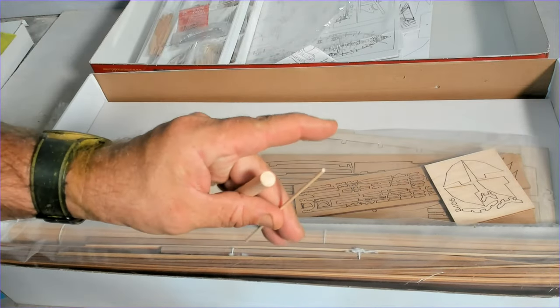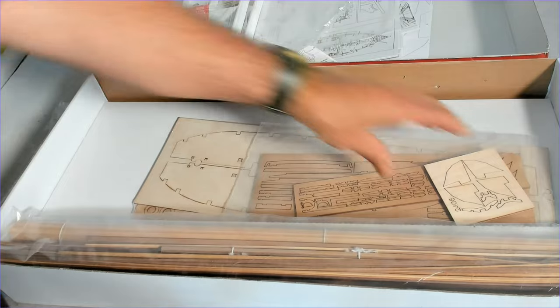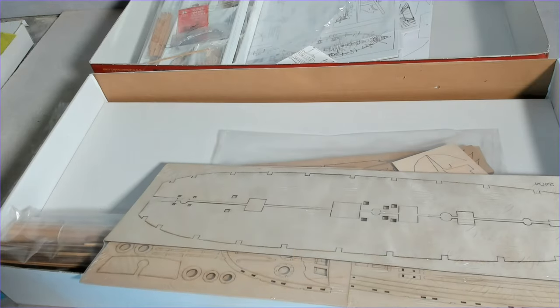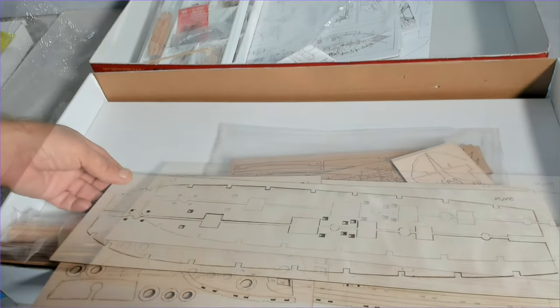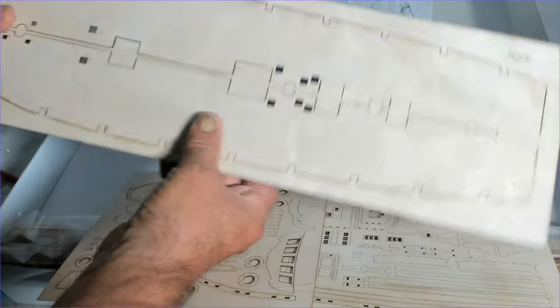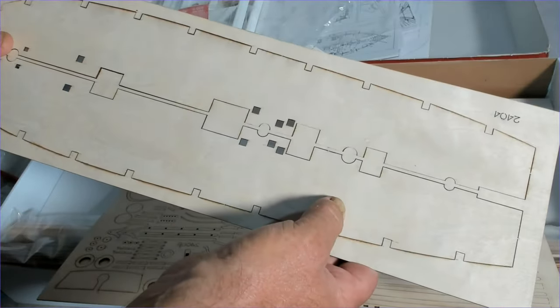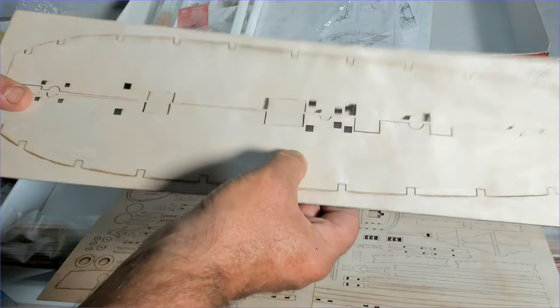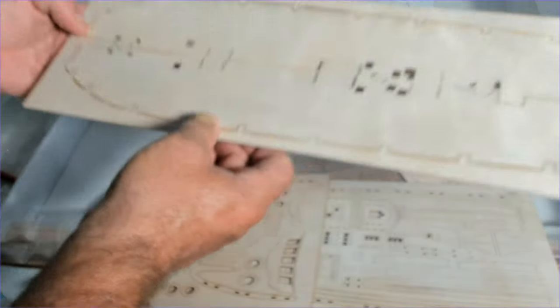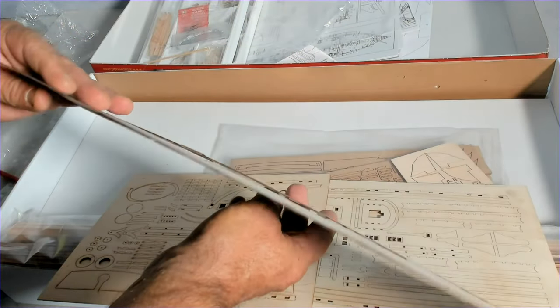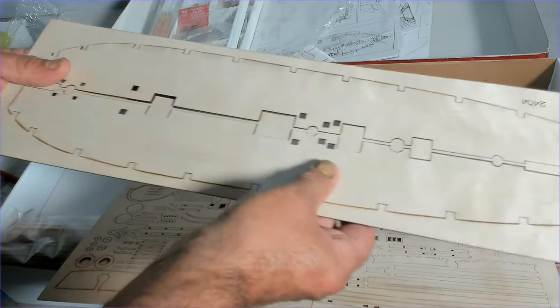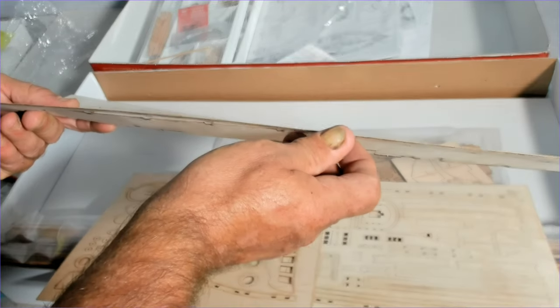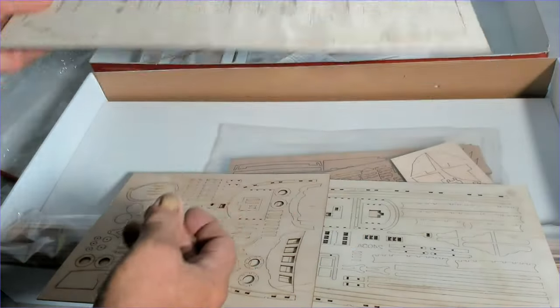A couple of pieces of dowel there. And then we have the laser cut parts. Now we have some deck pieces. I'd say that's the main deck. Let's be very careful with that. That is paper thin, extremely thin. I don't even think it's, I think it's like almost like an MDF, like a very thin MDF, it's not plywood. Yeah we'll have to be very careful when we're fitting that.